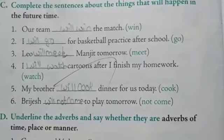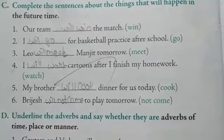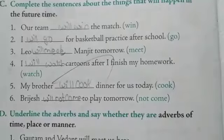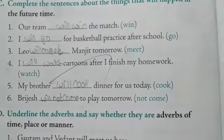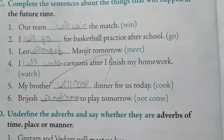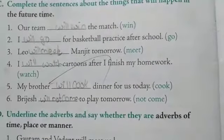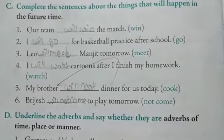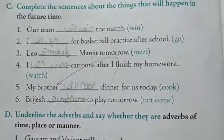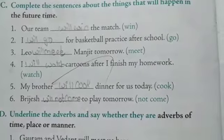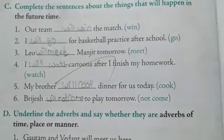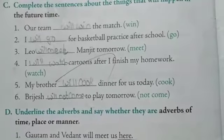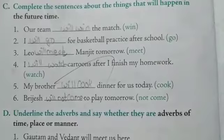Second one. I dash for basketball practice after school. So you are informing at your home to your parents that you are going for the basketball practice after school. You are informing about what you are going to do in future. So, I will go. We use the word in general way. So, I will go for basketball practice after school.